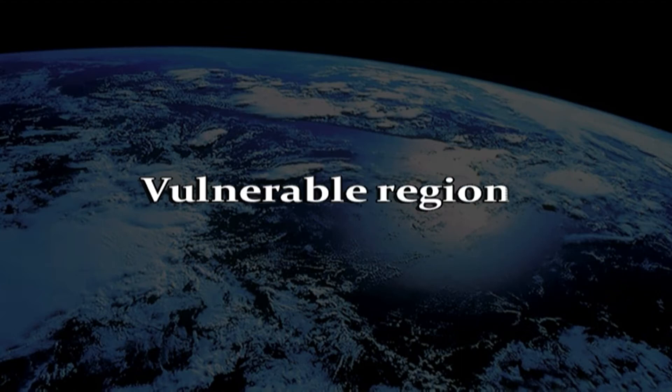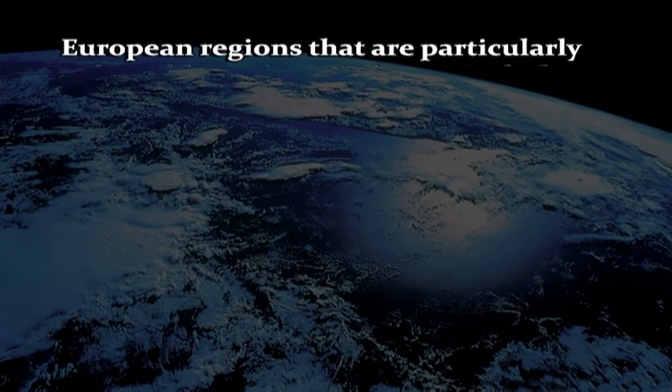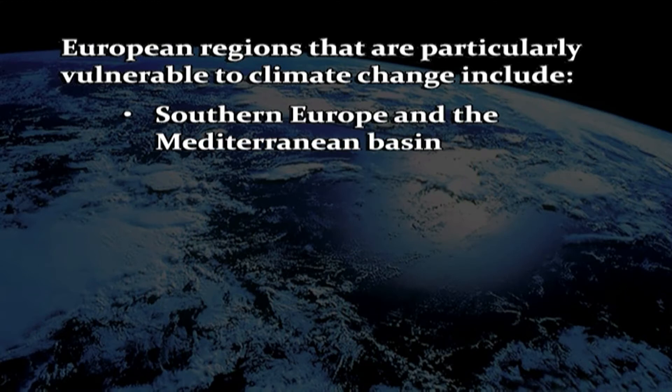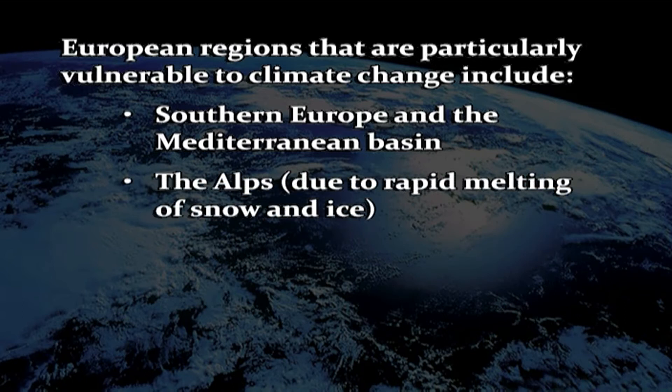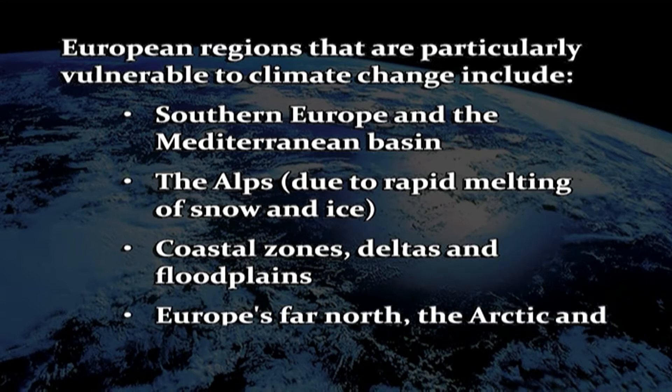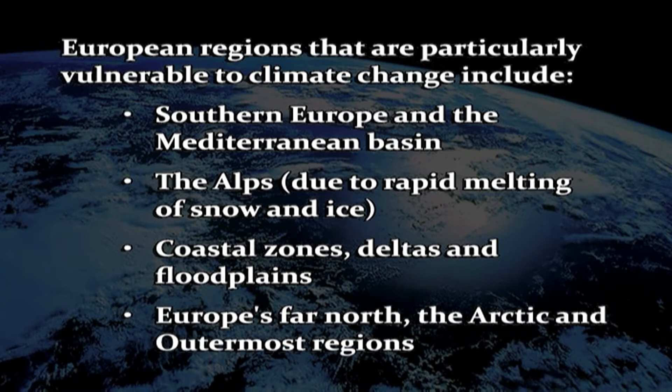Now let us know the vulnerable regions. Vulnerability to climate change varies widely across regions. Many poor developing countries are among the most vulnerable to climate change and also have the least resources to cope with it. European regions that are particularly vulnerable include: Southern Europe and the Mediterranean basin due to heat and droughts; the Alps due to rapid melting of snow and ice; coastal zones, deltas and floodplains due to sea level rise, intense rainfall, floods and storms; and Europe's far north, the Arctic and outermost regions due to increased global warming.